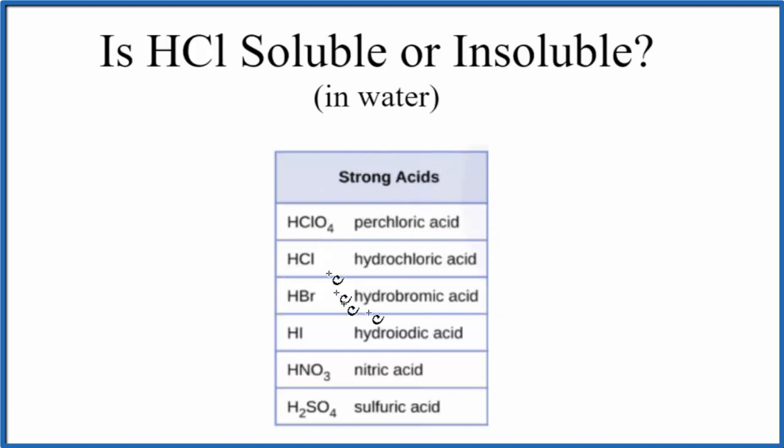These will all dissociate completely in water. So if we put a strong acid in water it's going to break apart into its ions, that means it's going to be soluble. And here's our hydrochloric acid HCl right here, so this list tells us that all these strong acids are going to be soluble in water.